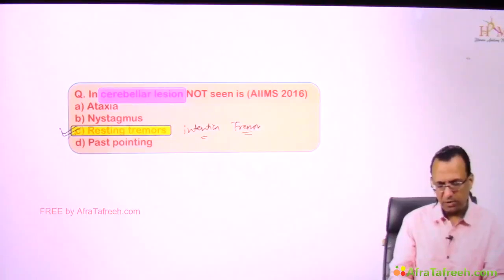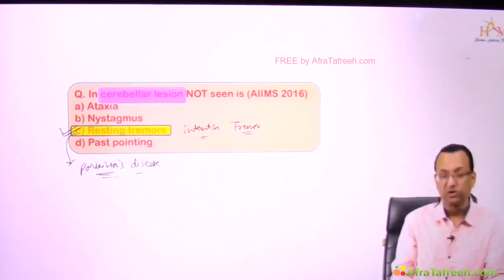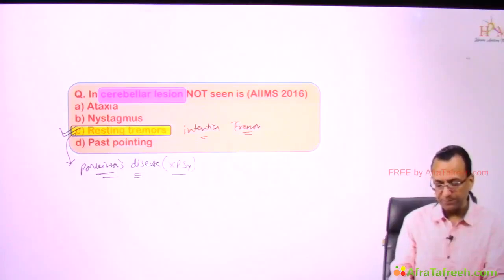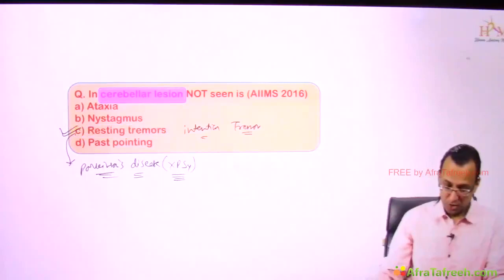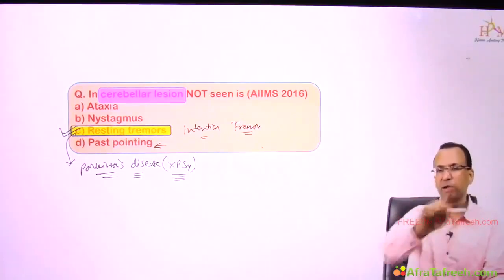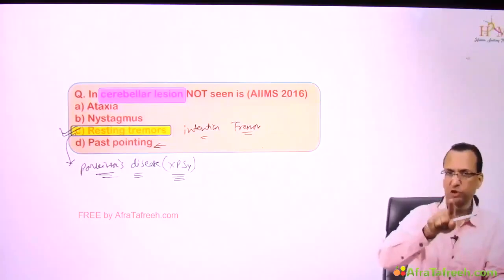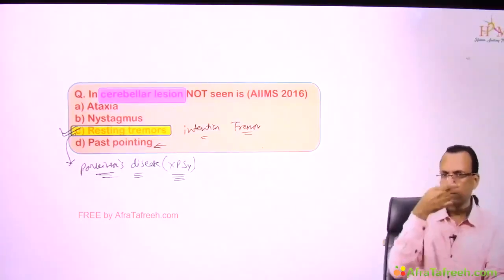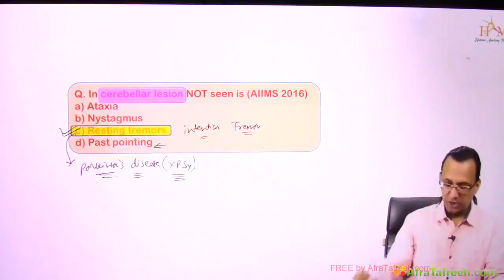Resting tremor is seen in Parkinson's disease, which is a basal ganglia disorder — extrapyramidal symptomology. In cerebellar lesion, there is past pointing: when asked to touch the tip of the examiner's finger or their own nose, the finger goes beyond the target and then touches. Past pointing is present, but resting tremor is not. This is how you distinguish cerebellar from basal ganglia pathology.